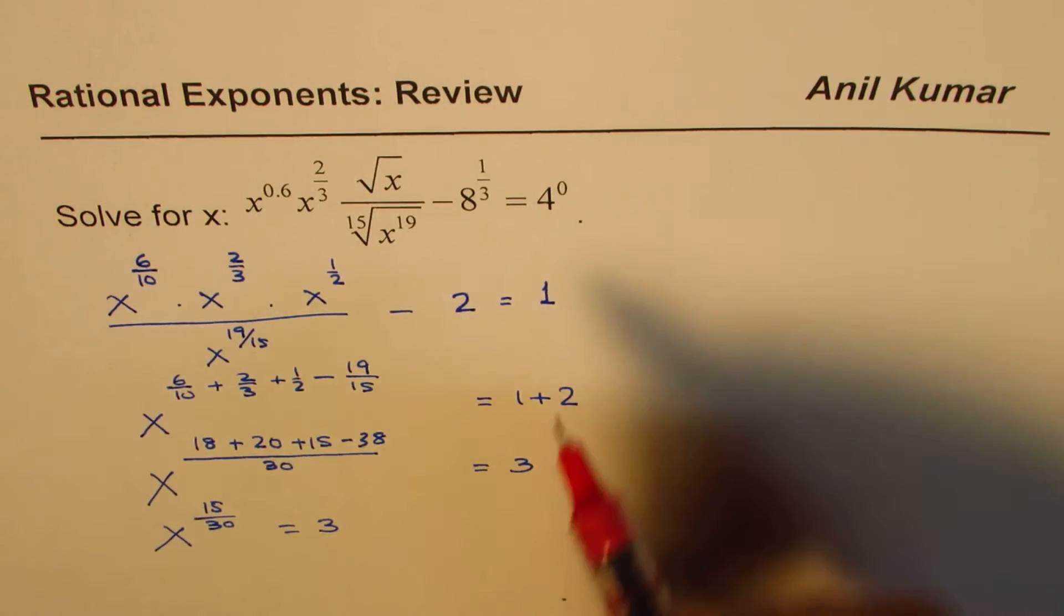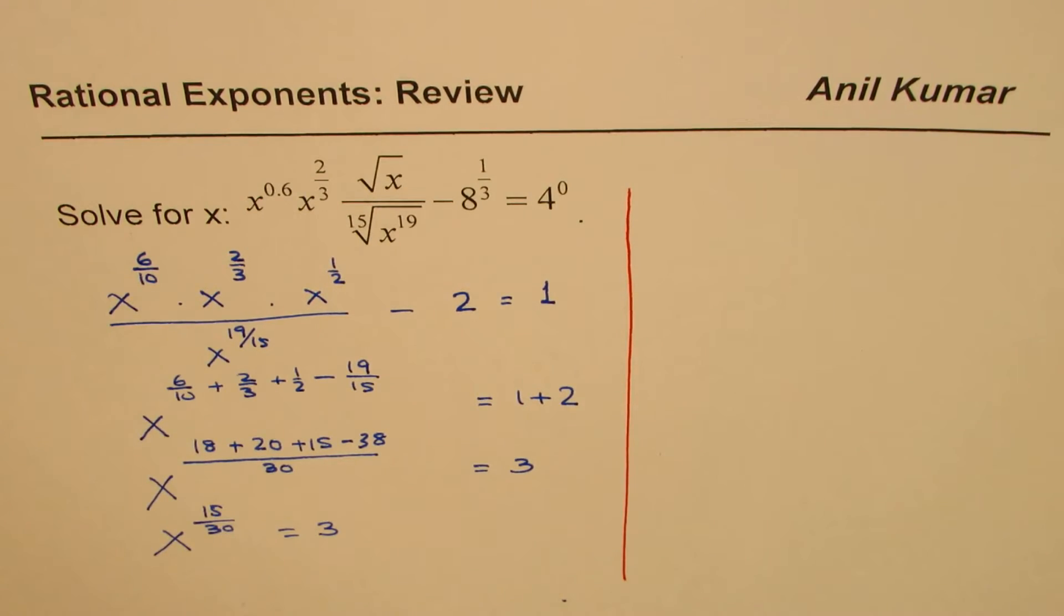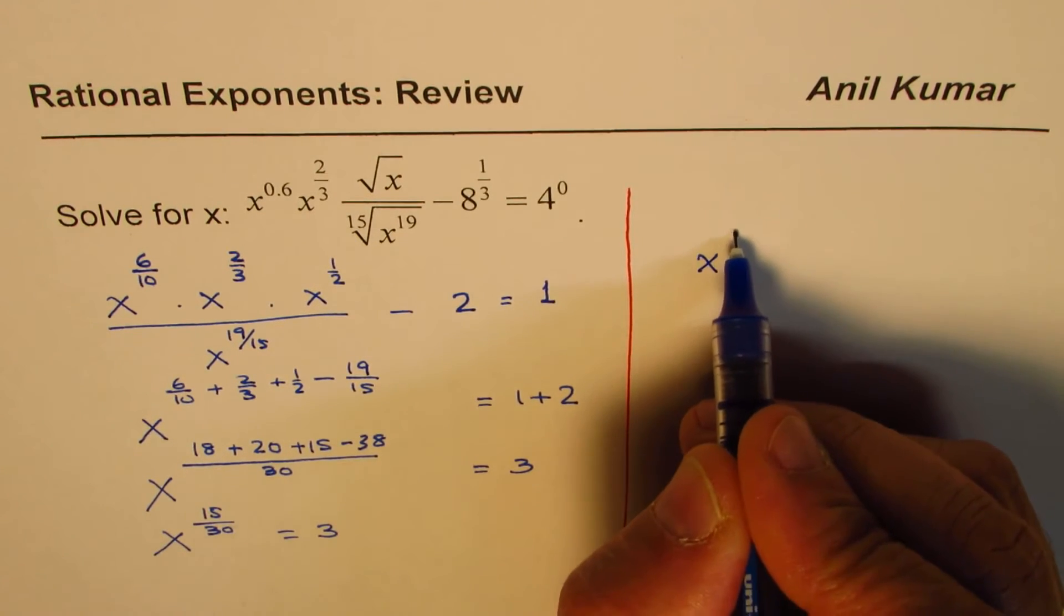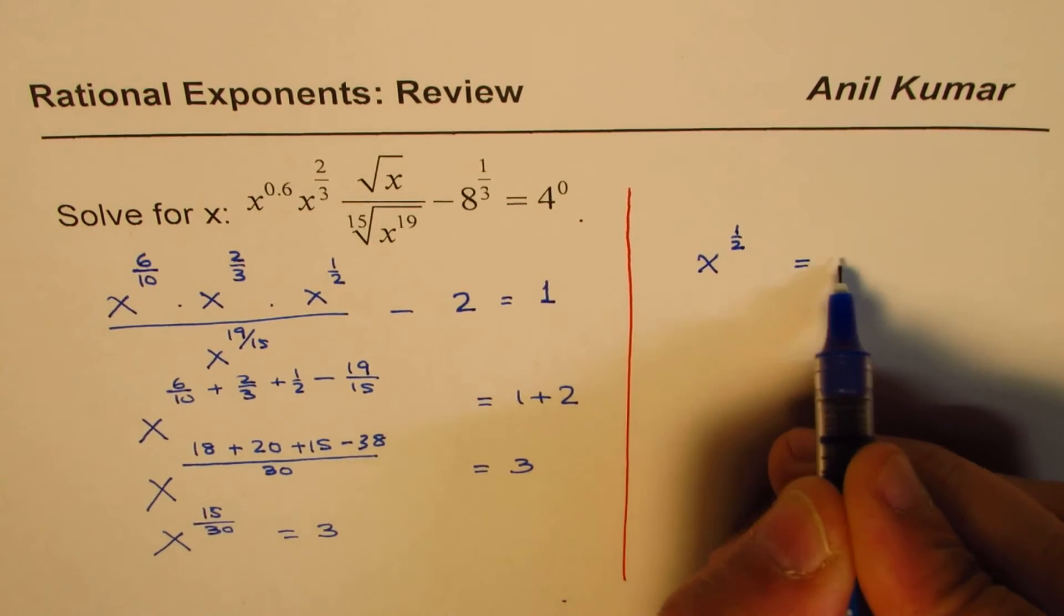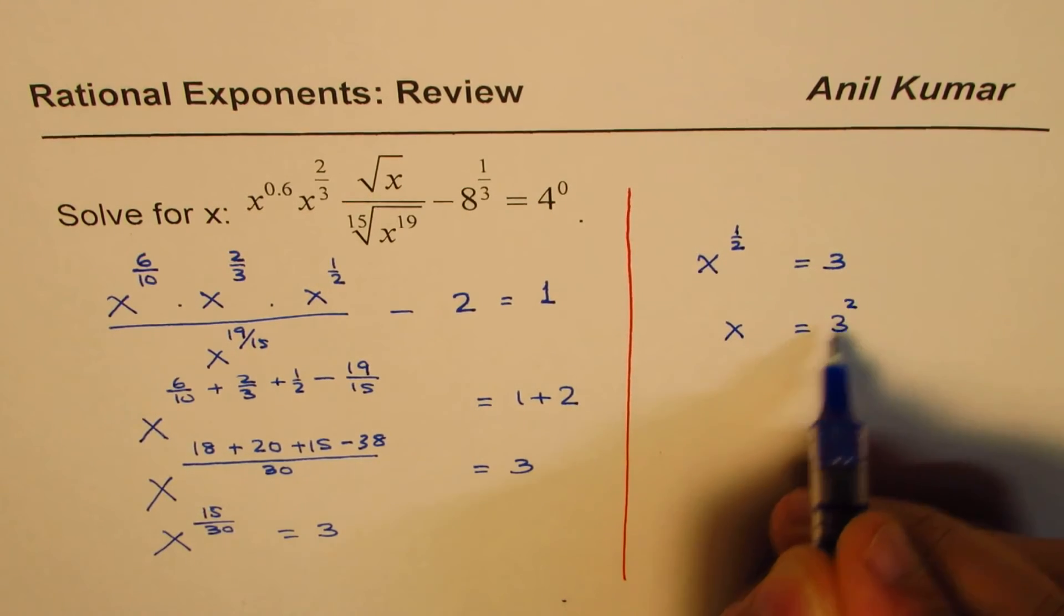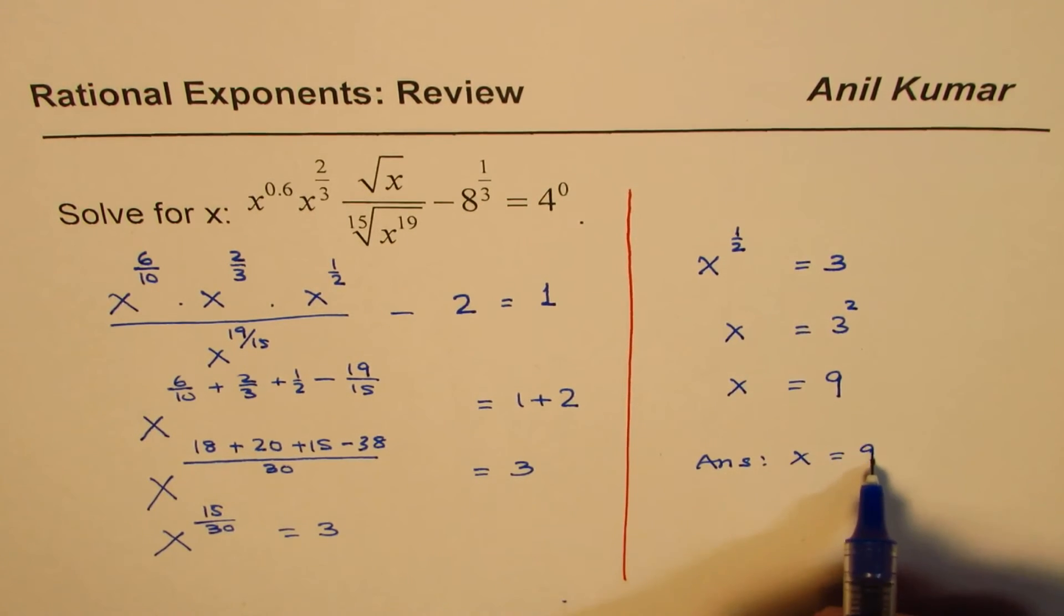Now let's find the solution. We're very close now. x^(15/30), which simplifies to x^(1/2), equals 3. So x equals 3 squared. x equals 9. Our answer is x = 9.